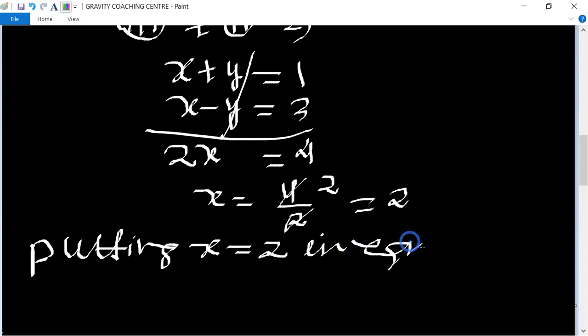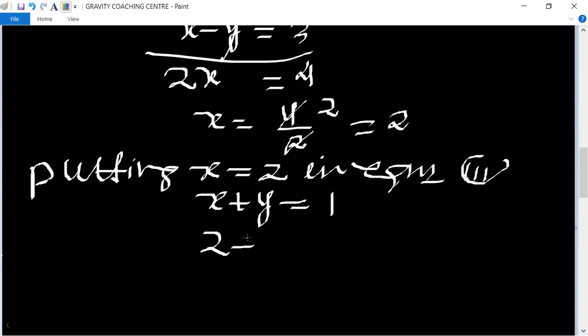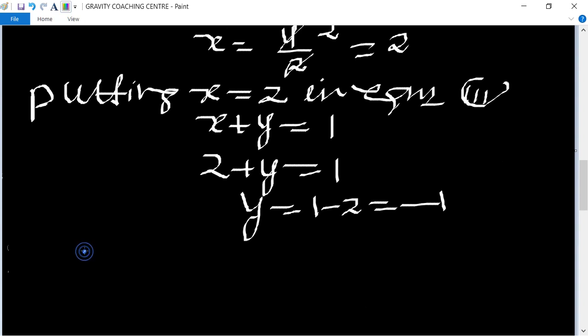The third equation is x plus y equals 1, so 2 plus y equals 1, and y equals 1 minus 2, which equals minus 1. Therefore, x equals 2, y equals minus 1, which is the required value.